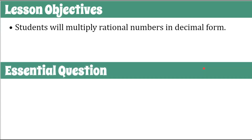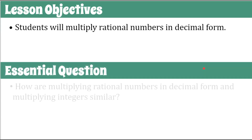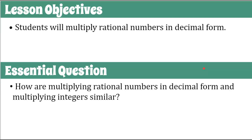The question I'd like you thinking about as I go through the lesson is: how are multiplying rational numbers in decimal form and multiplying integers similar? So how are multiplying whole numbers and their opposites similar to positive and negative decimals?